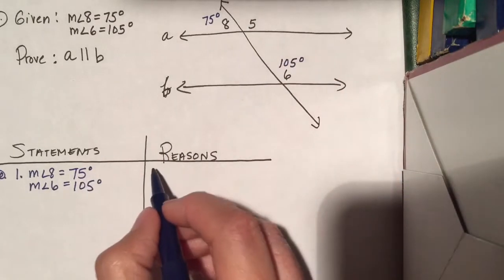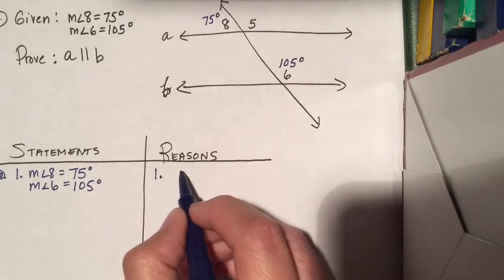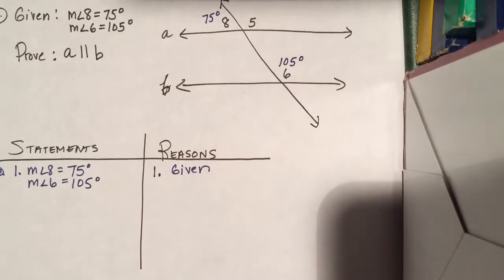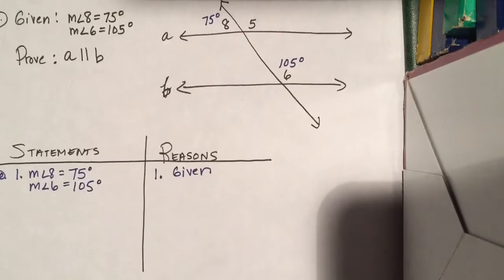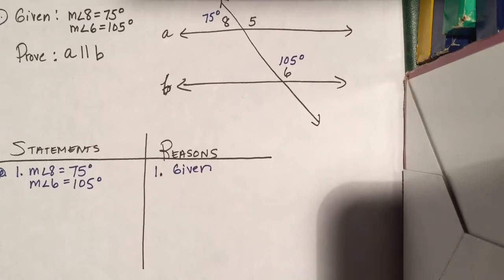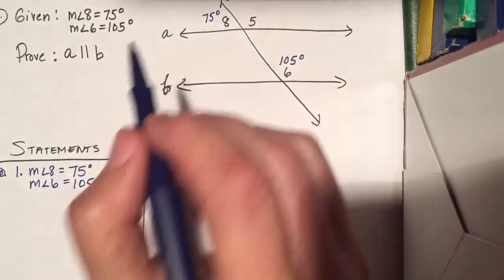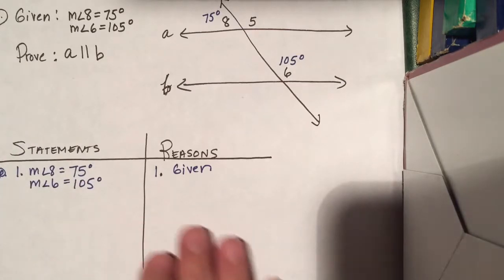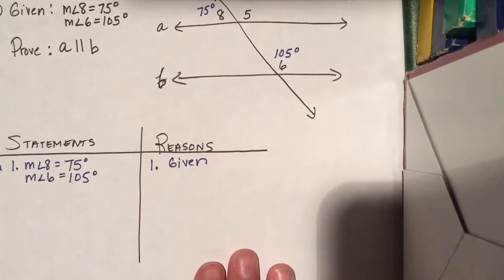Some people choose to put givens in different places, and that's the reason — the reason is 'given.' I prefer that sometimes, but for our purposes, to cut down on the number of steps you have to take for our class, we're just going to put all the givens together unless it really does cause confusion. So I'm going to put all the givens together first.